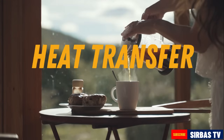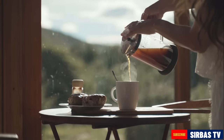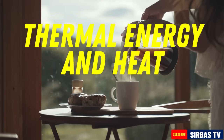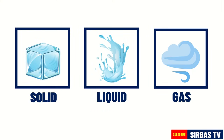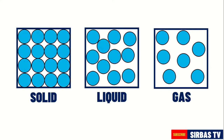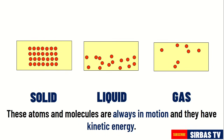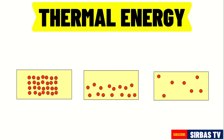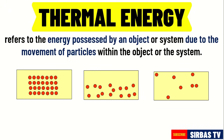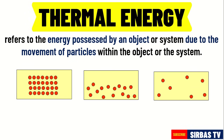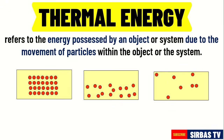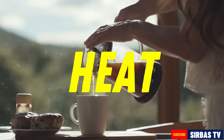Before we discuss how heat transfer occurs, let us first understand the concepts of thermal energy and heat. All forms of matter are made of atoms and molecules. These atoms and molecules are always in motion and they have kinetic energy. The energy that these moving or vibrating particles possess is called thermal energy. Thermal energy refers to the energy possessed by an object or system due to the movement of particles within the object or system.